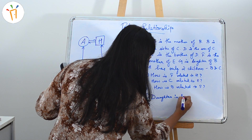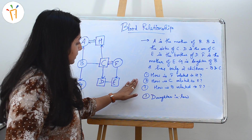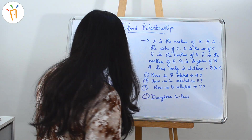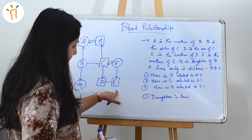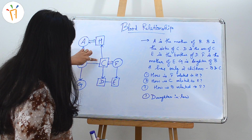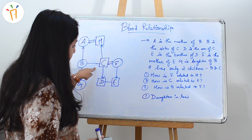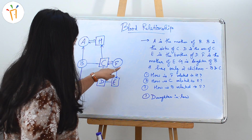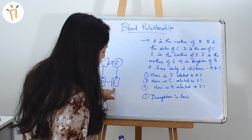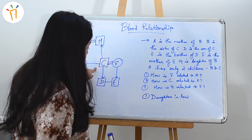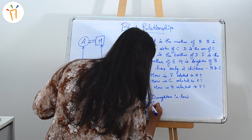Second question: how is C related to E? C is here and E is here. Starting from C — C is the husband, F is the wife, and E is the son — so C will be the father of E. The answer is father.